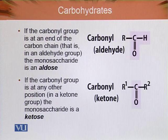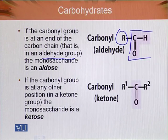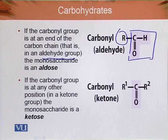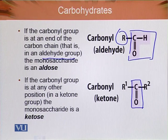If the carbonyl group is at the end of the carbon chain, it is an aldehyde group and the monosaccharide is called an aldose. If the carbonyl group — the double-bonded oxygen — is attached at any position in the middle of the chain, it is known as a keto group. If the carbonyl group is at any position other than the end, the monosaccharide is called a ketose. This is the key difference between an aldehyde group and a keto group.